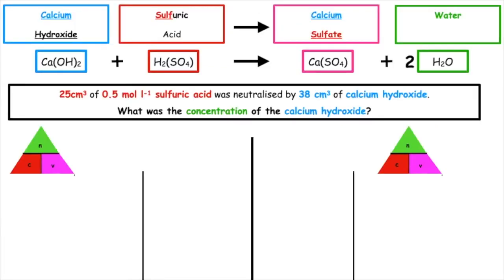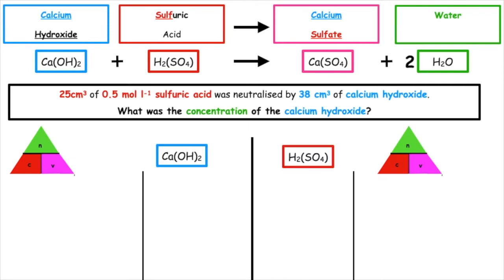Let's have a go at doing a titration calculation — this is worth three marks in your exam. If we have 25 cm³ of a 0.5 mol/L sulfuric acid solution and it was neutralised by 38 cm³ of calcium hydroxide, what was the concentration of the calcium hydroxide? The first thing we have to do is take our entities down from the balanced equation — these are the things we're given information about in the question. So we have calcium hydroxide and sulfuric acid.